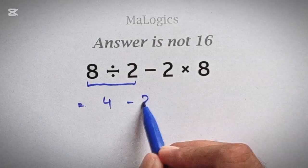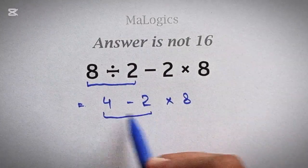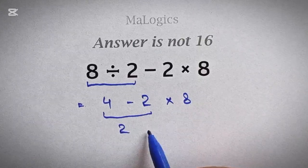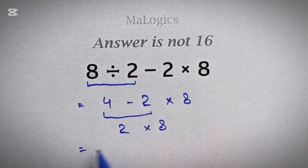Now 4 minus 2 times 8. Then they subtract this 2 from 4, and 4 minus 2 equals 2. Now 2 times 8 equals 16.